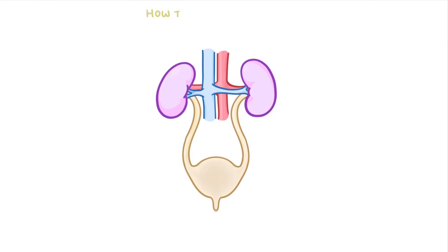To properly understand how the kidneys make urine is kind of complicated. And to explain it, we're going to have to take a closer look at the anatomy. Don't worry about remembering all of the words we're going to mention though — just try to understand the overall process.